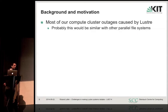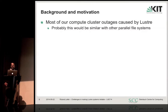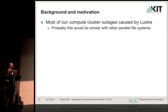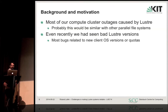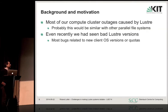Some background for my talk: most of our compute Lustre outages in the past years were actually caused by Lustre. I believe this would probably be similar with other parallel file systems. And in fact, with the file systems we had before, they were also mainly responsible for the outages. And even recently, we had seen some pretty bad Lustre versions. Most of the latest bugs were related to new client operating system versions and quotas.